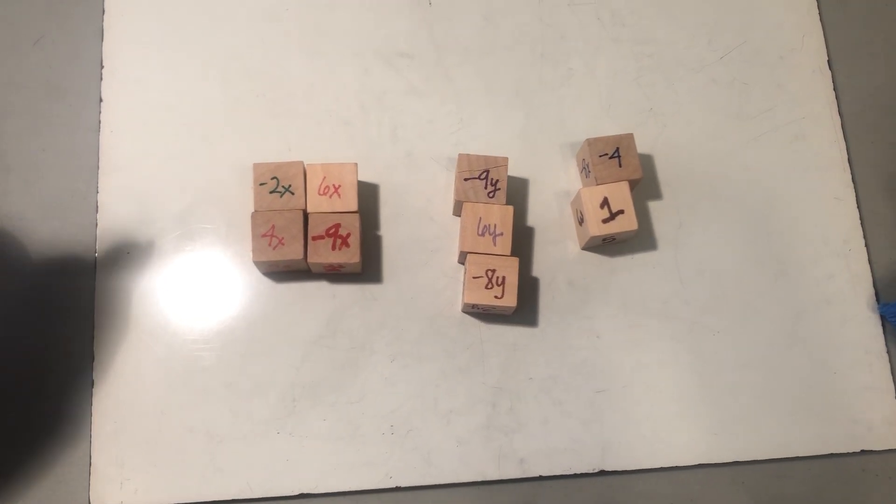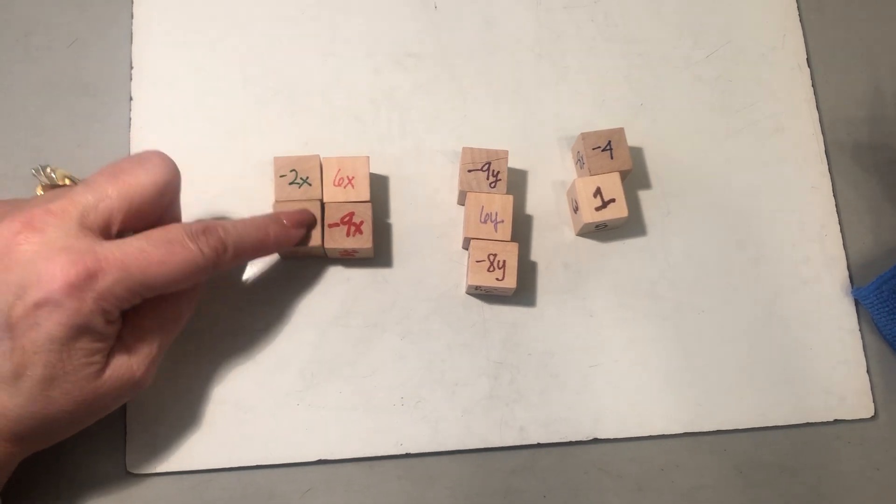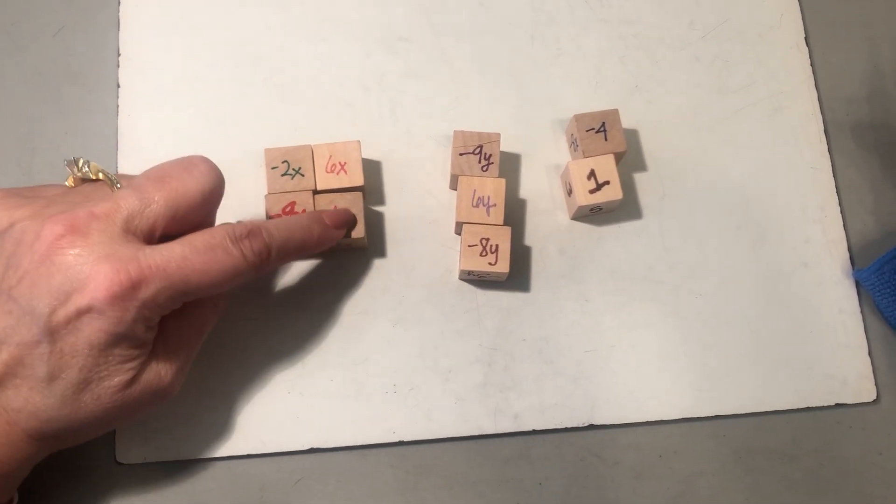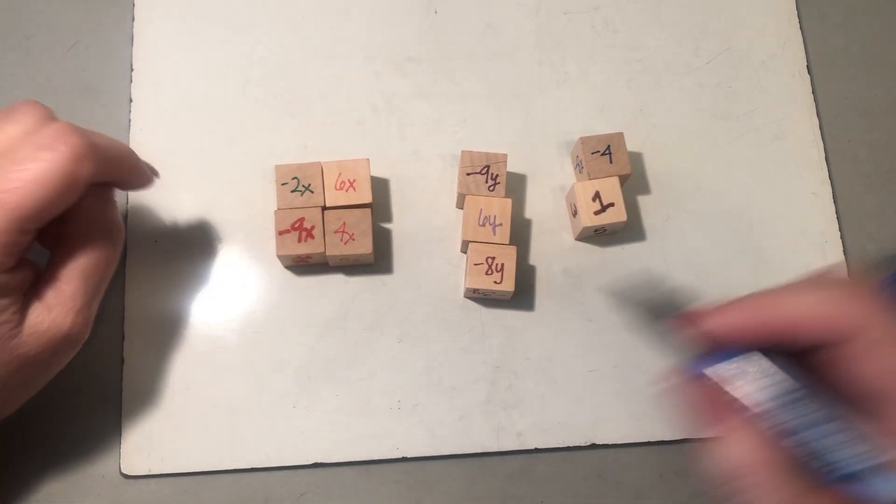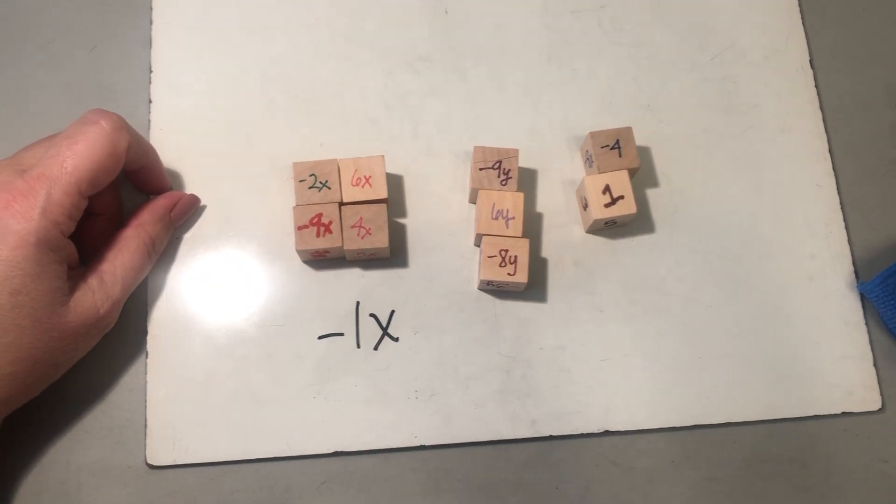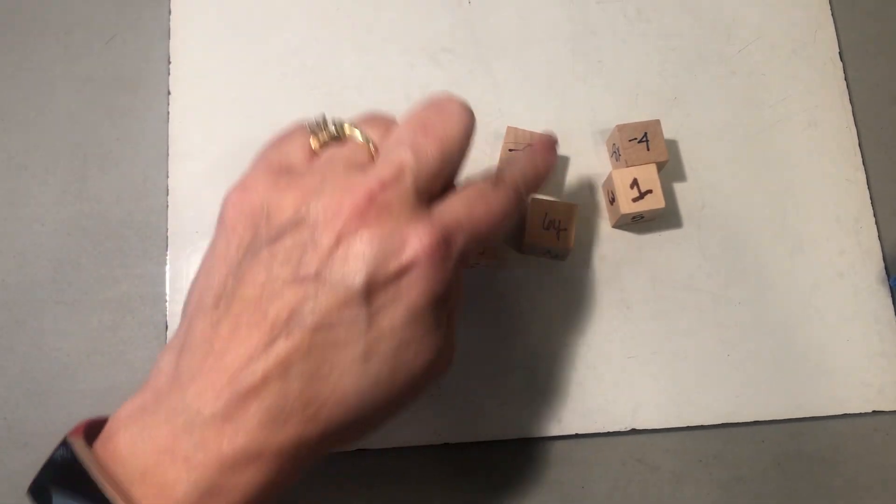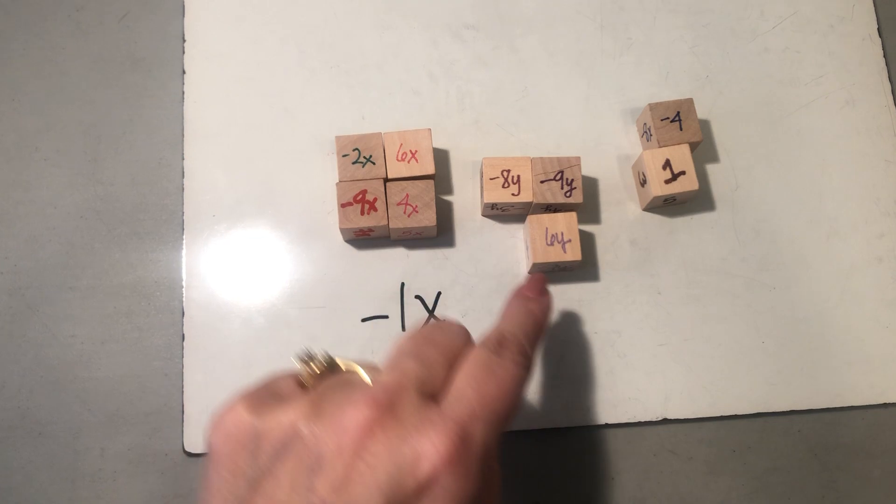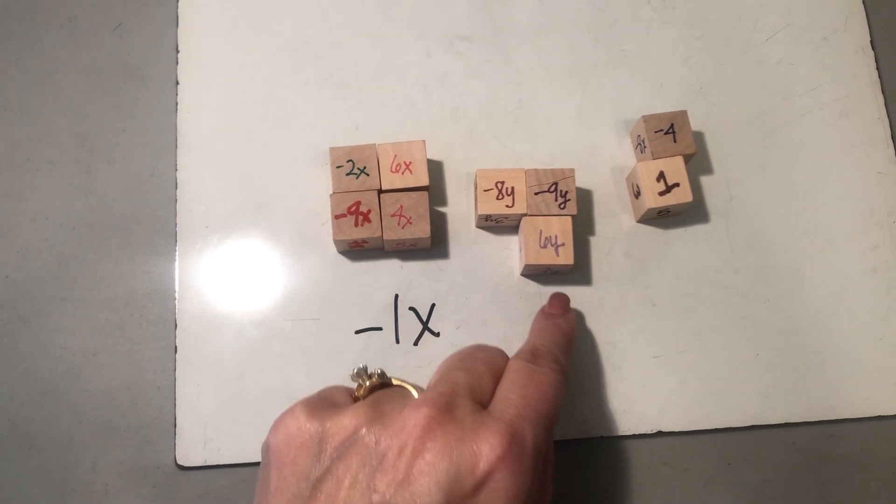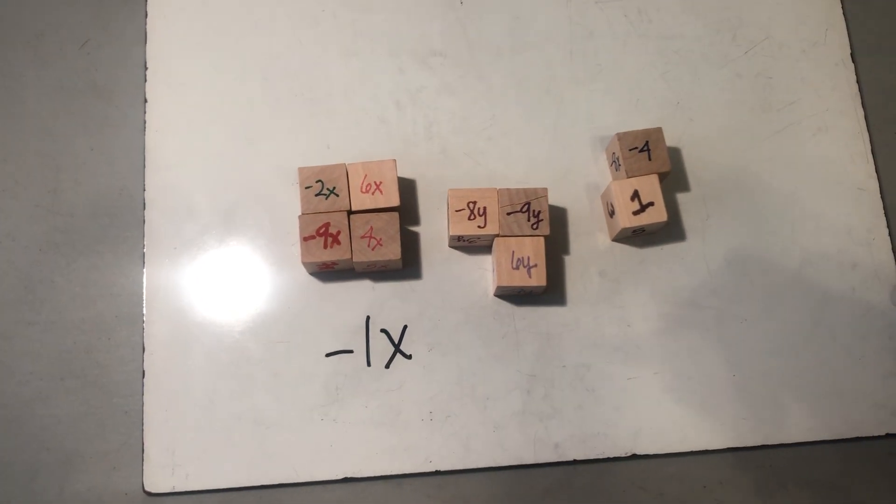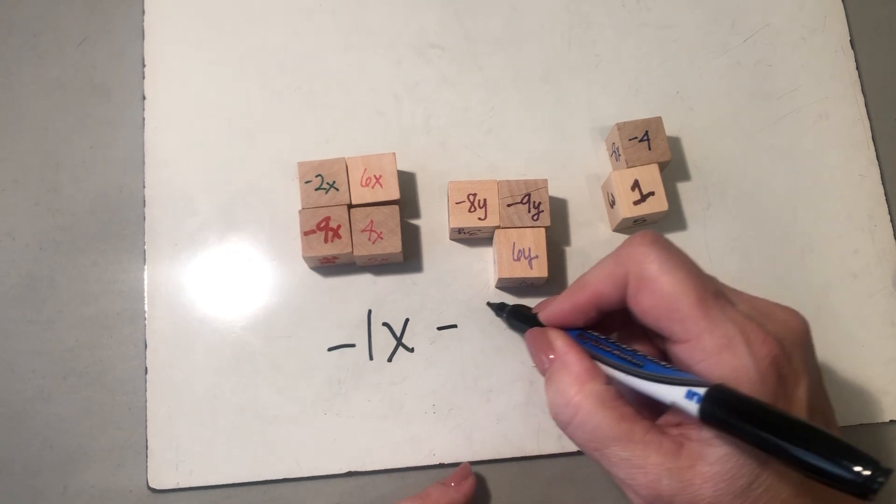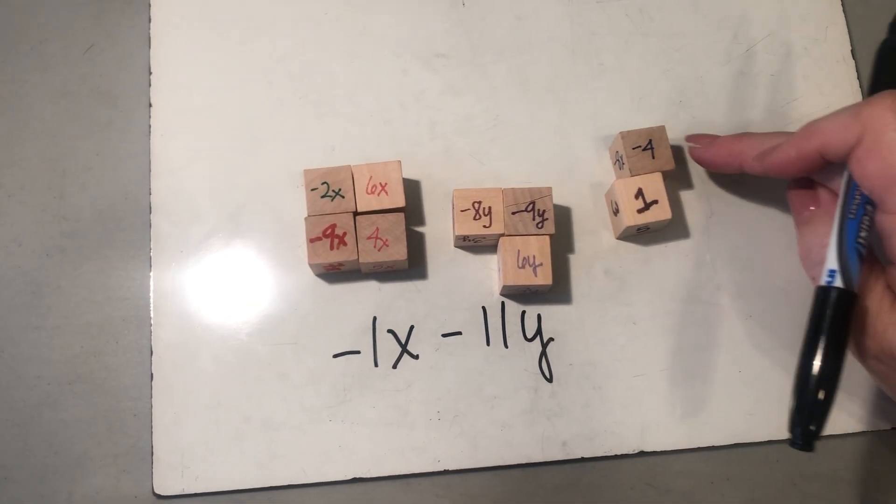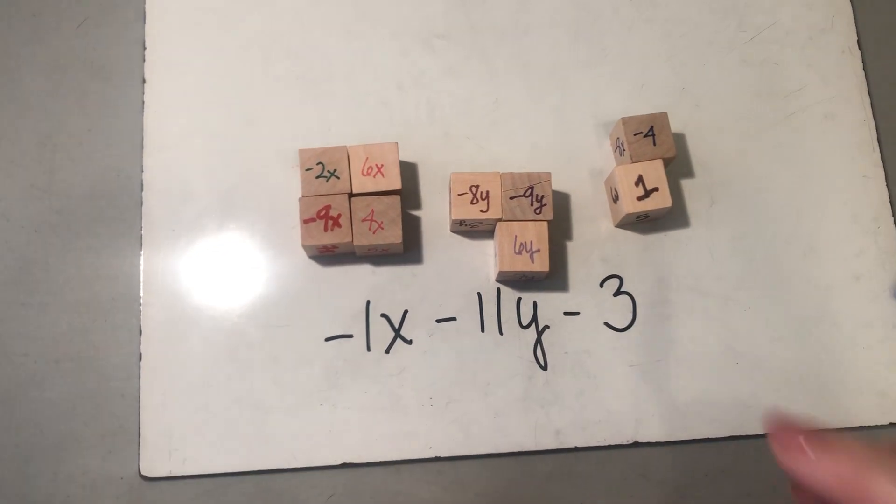Okay, so if I go put it together here, put my negatives together. So here I have negative 11 and positive 10. I know negative 11 and positive 10 is a negative 1x. Here if I move the negatives together, I have negative 17 plus 6, negative 11y. And then I have a negative 4 plus 1 gives me negative 3.